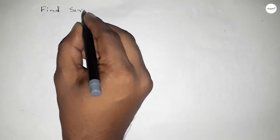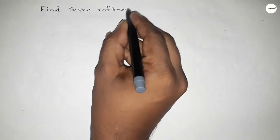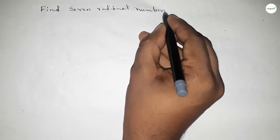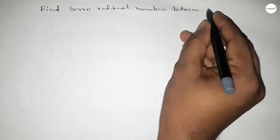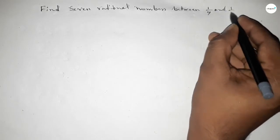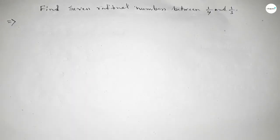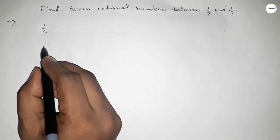Hi everyone, welcome to SSJ classes. Today in this video we have to find 7 rational numbers between 1 over 3 and 1 over 4. So let's start. First of all, write down here the given numbers: 1 over 4 and 1 over 3.